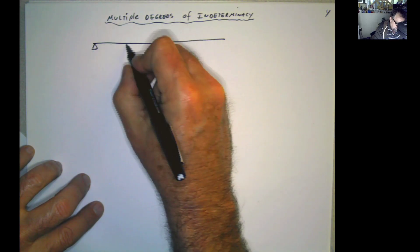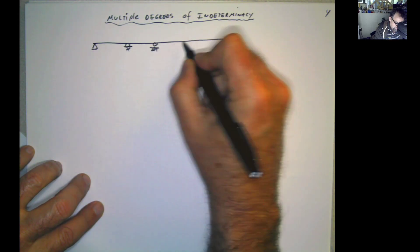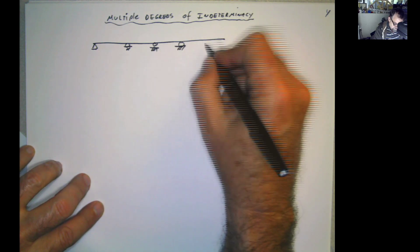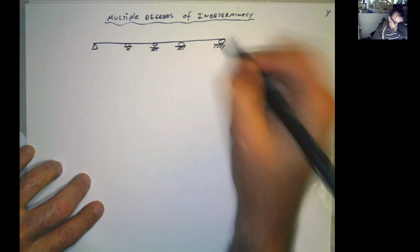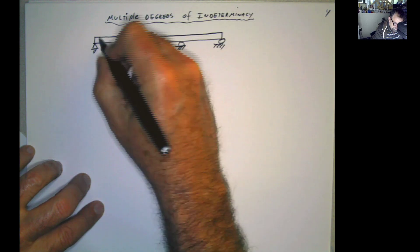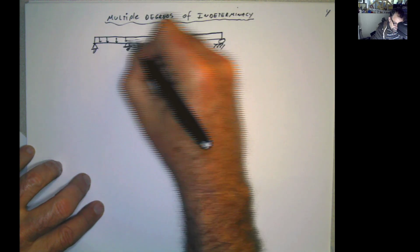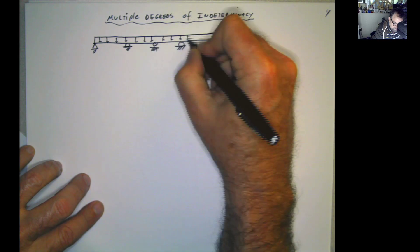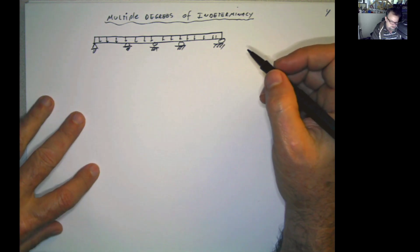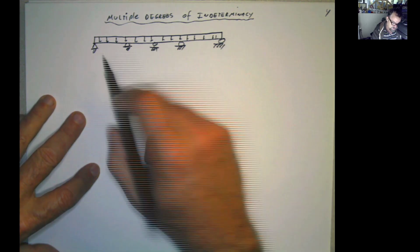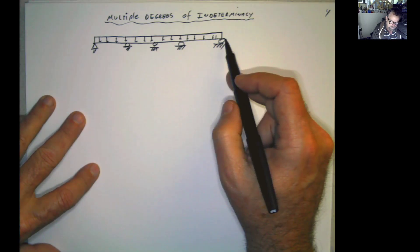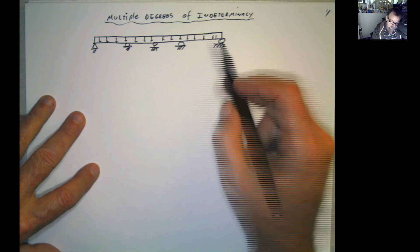For example, let's say that you have something like this — a structure with a distributed load on top. The first thing here is checking what is the degree of indeterminacy. You count: 2, 3, 4, 5, 6 — so r equals 6, and you have one member. So you have three degrees of indeterminacy.